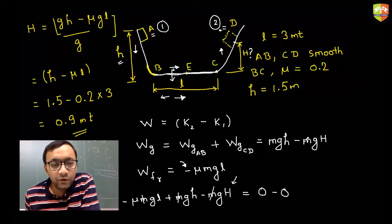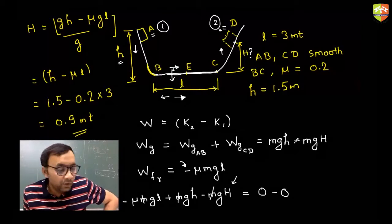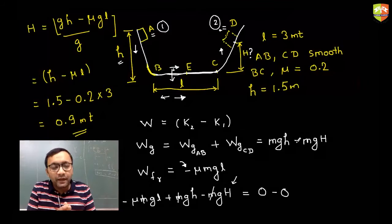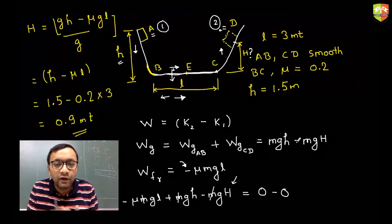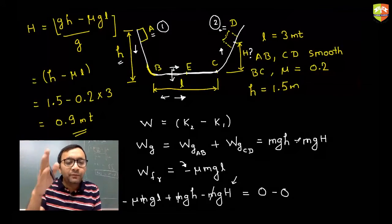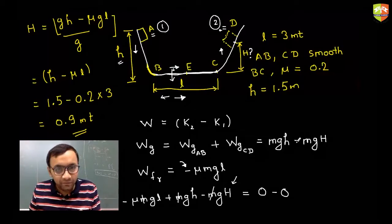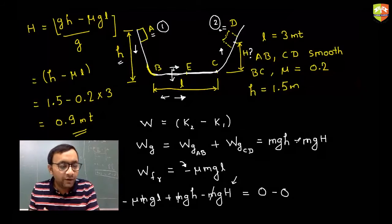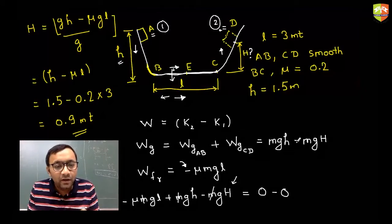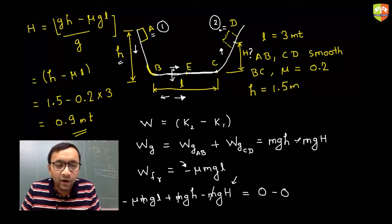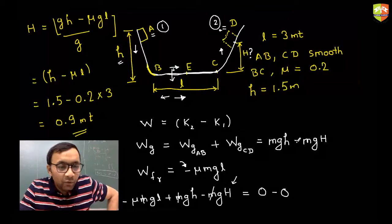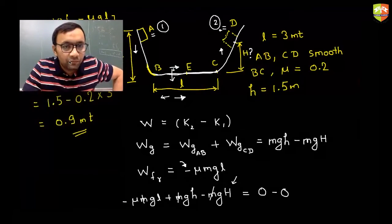Substituting: H equals 1.5 minus 0.2 times 3, which gives 0.9 meters. Note: you can break up the motion segment by segment or take initial and final points directly — both approaches work. If you can calculate the total work done, it doesn't matter how you split it.